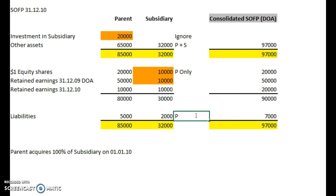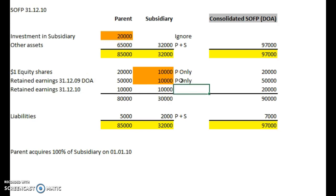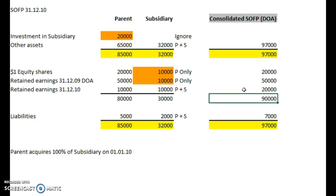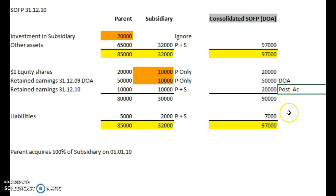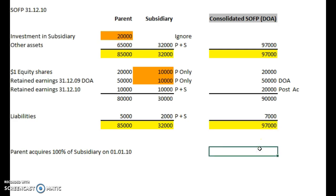The retained earnings at the date of acquisition — we only include the parent. Then the post-acquisition earnings: it's 100% ownership, there's no non-controlling interests — we'll look at that later. So it's parent and the subsidiary added together, just a straight adding across: 10,000 plus 10,000 for the year gives 20,000 post-acquisition earnings. This is all post-acquisition; that figure is pre-acquisition or date of acquisition. And then these two added together give the total equity plus liabilities. So there you have it — consolidated statement of financial position.